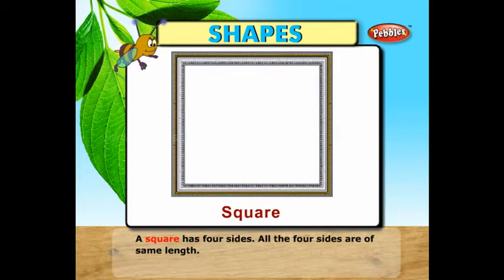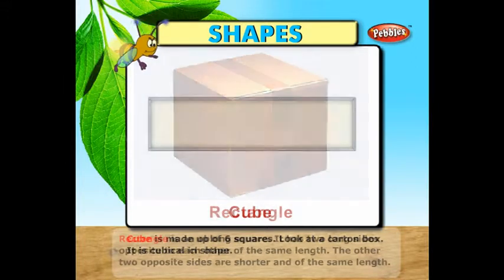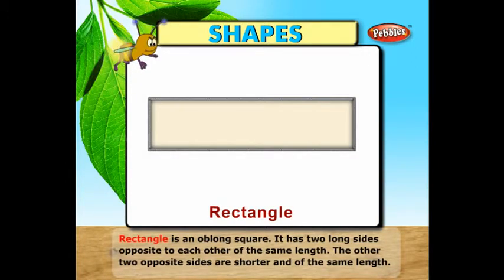A square has four sides and all four sides are of the same length. A cube is made up of six squares. Look at a carton box. It is cubical in shape. A rectangle is an oblong square.